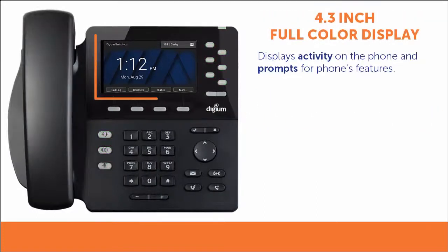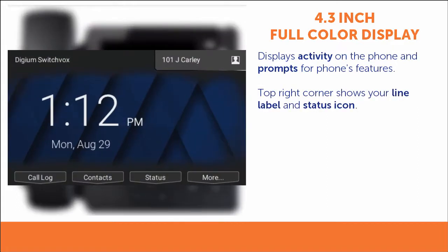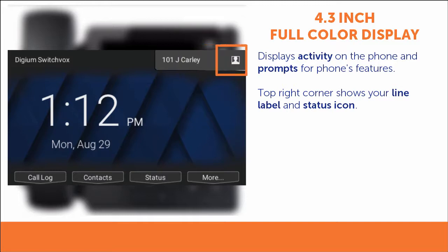The 4.3-inch, 480 by 272 pixel backlit color LCD panel displays activity on the phone and prompts for the phone's features. Your primary account will display in the top right corner of the screen, to the left of the first-line key. This shows your line label and an icon representing your current status.